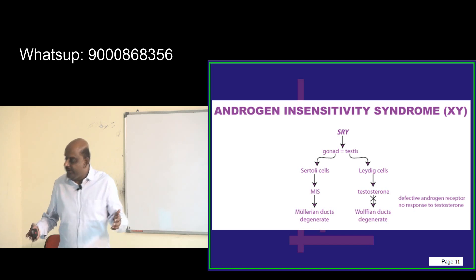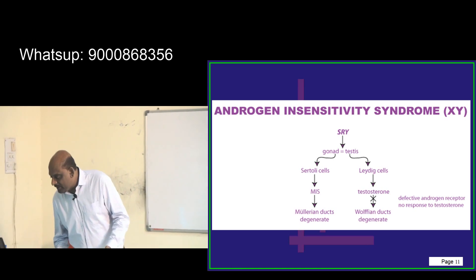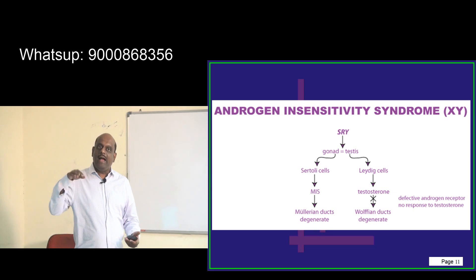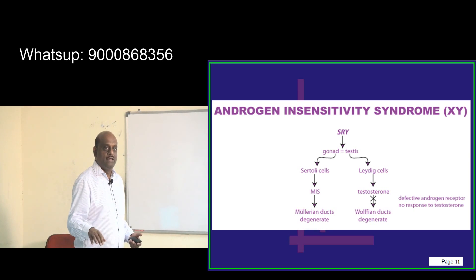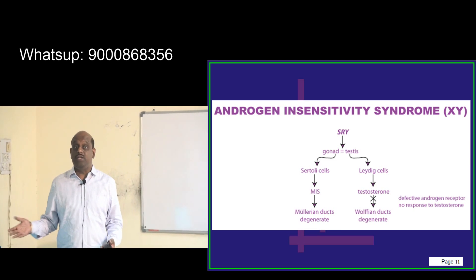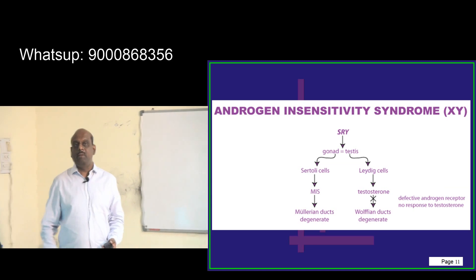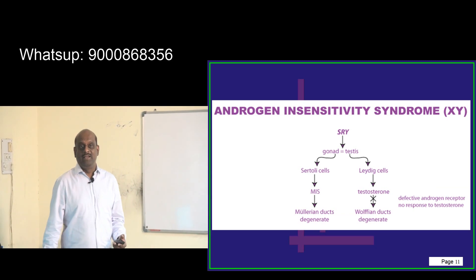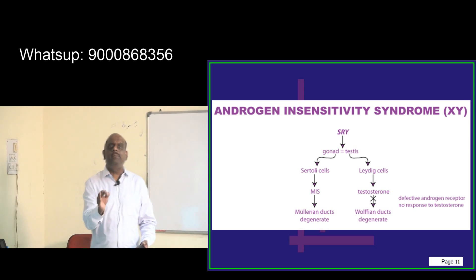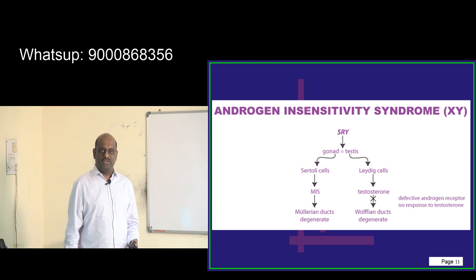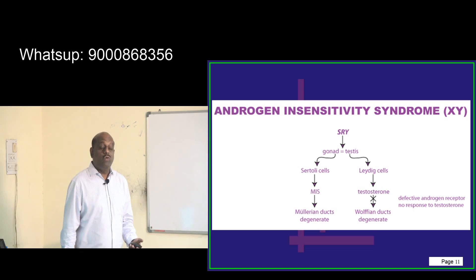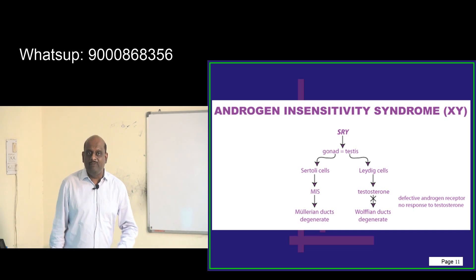In androgen insensitivity syndrome, there is a defective androgen receptor. When testosterone tries to act on its end organs — such as those responsible for axillary and pubic hair development — it cannot. Receptor-level insensitivity means axillary and pubic hair does not develop. Breast development occurs in anyone with sufficient estrogen, regardless of chromosomal sex.